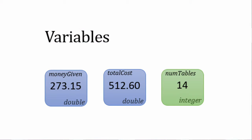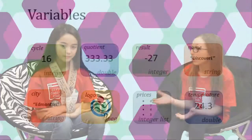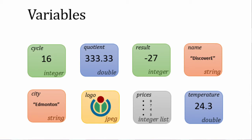There are some differences too. In programming, names can have more than one letter. Variables in programming might be called money given or total cost. They can also hold more than just numbers. They might hold text, a picture, a list — almost anything.